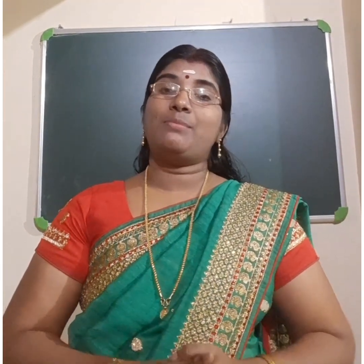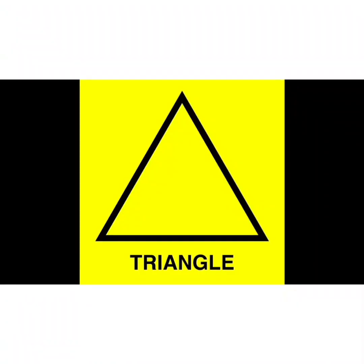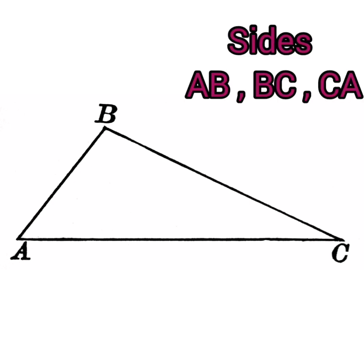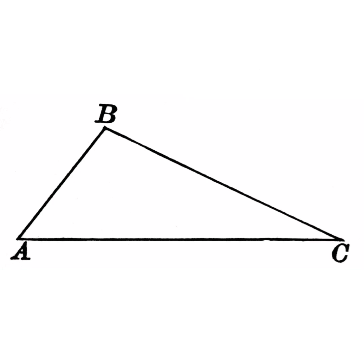A polygon is a closed figure which is made up of line segments. A polygon which is made up of three line segments is called a triangle. Triangle is the smallest polygon. It is made up of three line segments: AB, BC, and CA. These are the three sides of this triangle.